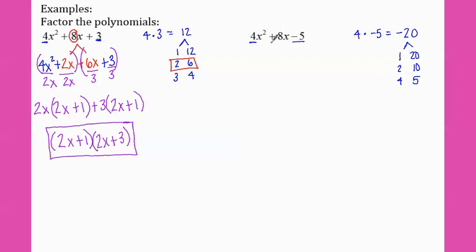Since my b term is positive, I know the smaller number is going to be the negative — so it's either negative one, negative two, or negative four. Which pair adds up to eight? It's negative two and ten.